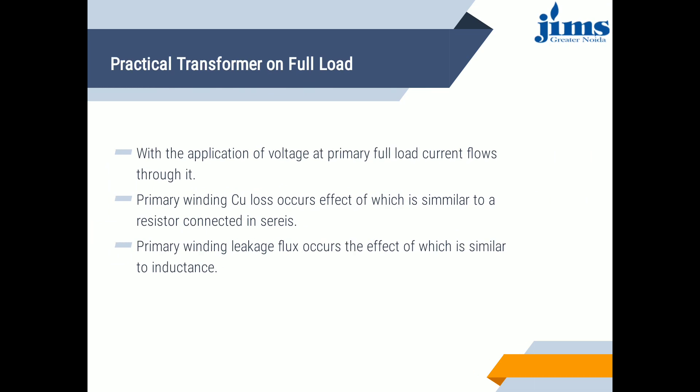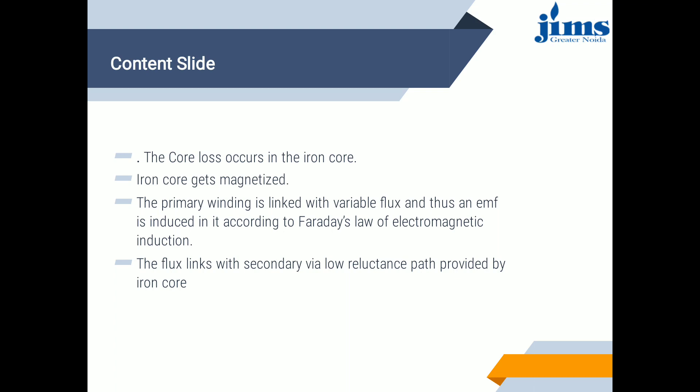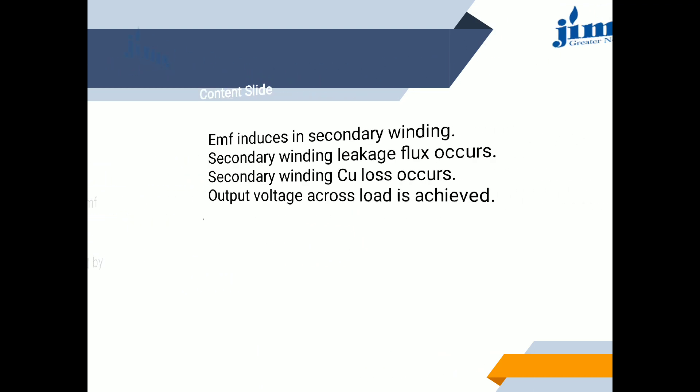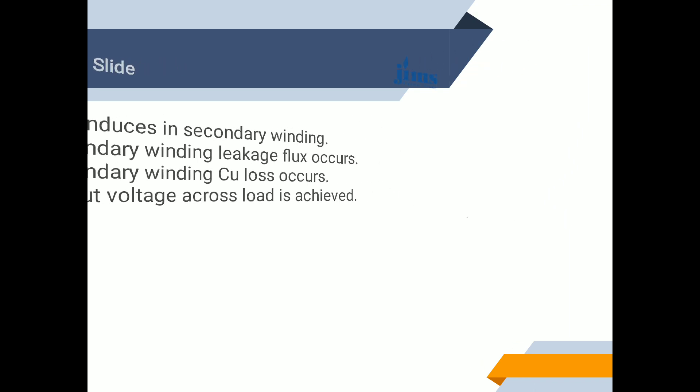Practical transformer on full load: with the application of voltage at primary, full load current flows through it. Primary winding copper loss occurs, the effect of which is similar to a resistor connected in series. Primary winding leakage flux occurs, the effect of which is similar to inductance. Core loss occurs in the iron core. The iron core gets magnetized, and the primary winding is linked with variable flux, inducing an EMF according to Faraday's law of electromagnetic induction. The flux links with the secondary through the low reluctance path provided by the iron core, inducing EMF in the secondary winding. Secondary winding leakage flux and copper loss also occur, and the output voltage across the load is achieved.